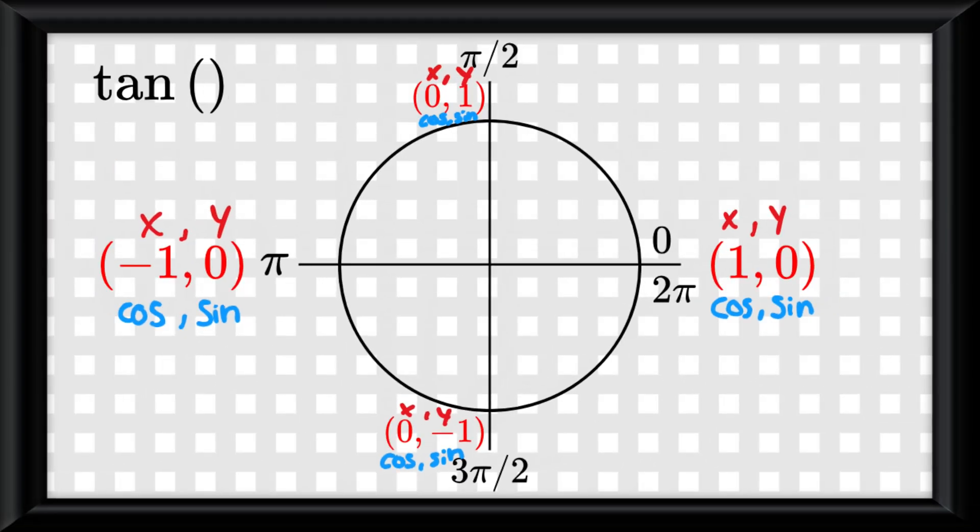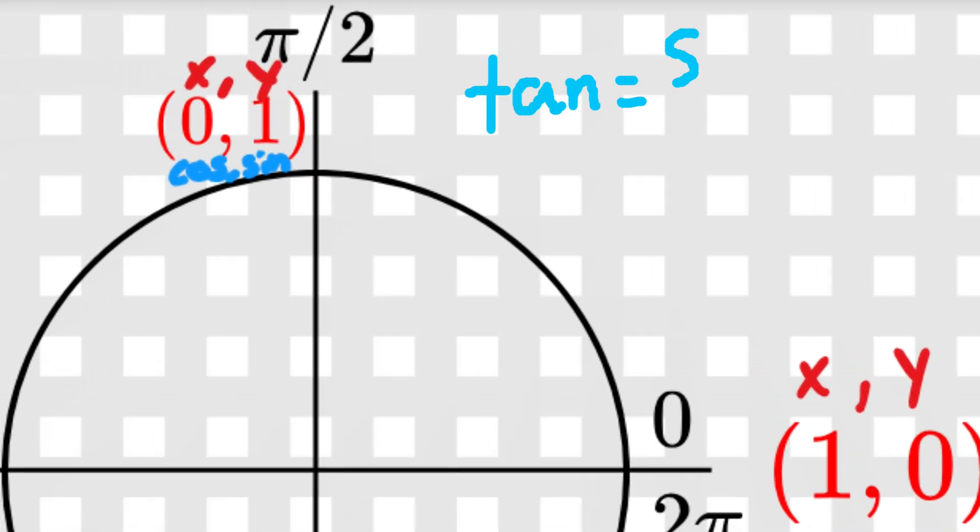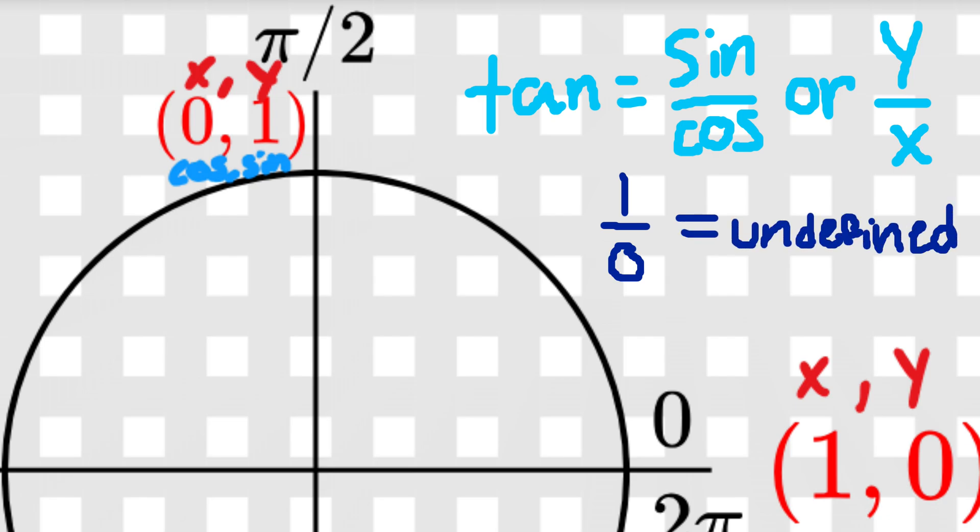If you were asked to find tangent of a quadrantal angle, so let's say 90 degrees or π over 2 radians, we can do this because we know tangent is just sine over cosine or y over x, which would be at π over 2 radians, 1 over 0, which is undefined because you can't divide anything by 0.